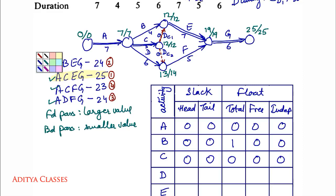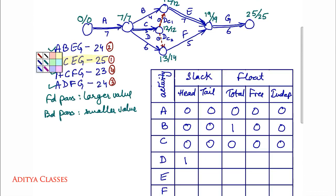For activity D: head slack is 14 minus 13 equals 1; tail slack is 7 minus 7 equals 0. Total float: 14 minus 7 minus 6 equals 1. Free float is total minus head: 1 minus 1 equals 0. Independent float is free minus tail: 0 minus 0 equals 0.